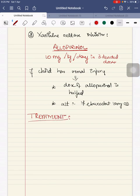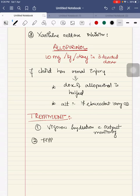Next, you are going to the treatment. Treatment for tumor lysis syndrome. The main treatment here is vigorous hydration with output monitoring. Second, for hyperuricemia treatment, you have to treat individually according to your lab value.